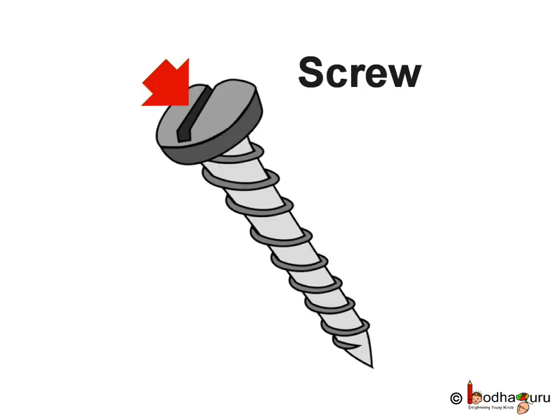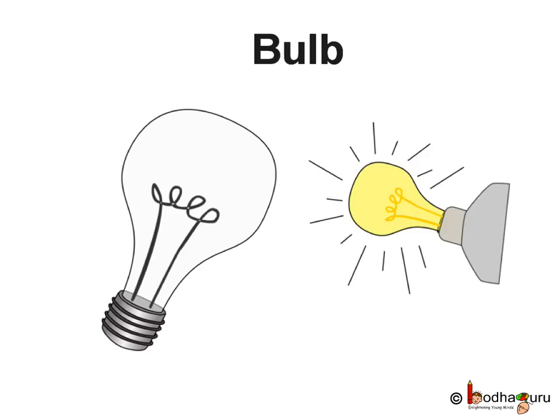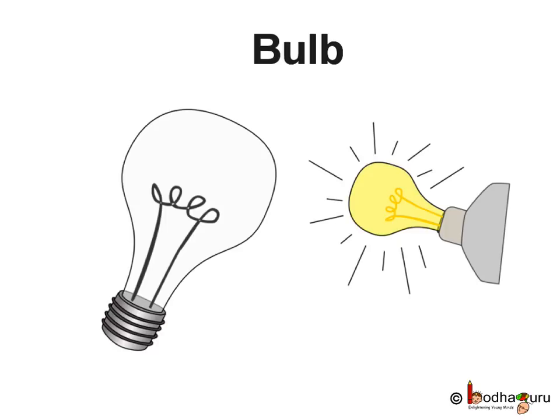The screw also has a groove on its head where the screwdriver fits in. Screws are used to fasten components and machine elements that can be loosened again, unlike nails. A good example is a bulb, which has a screw at the bottom to fix it in a holder. The threads grip the holder and the bulb, resulting in a secure hold. The only way to remove the bulb is to unwind it, so the screw goes in the opposite direction and the bulb comes out.